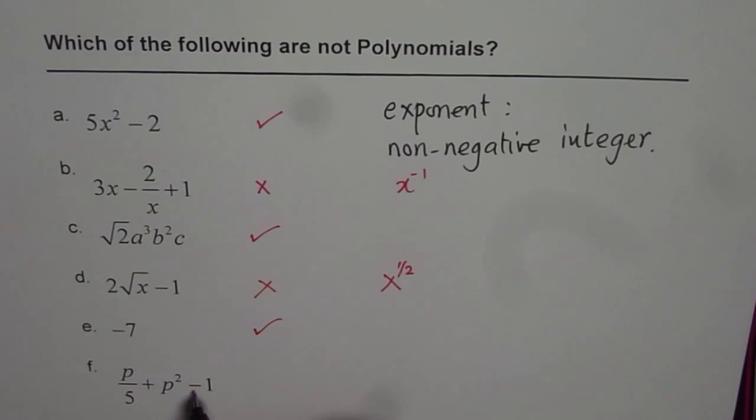p over 5 plus p square minus 1 is also a polynomial since the variables have non-negative integer. So, that is how we can answer this question. Thank you.